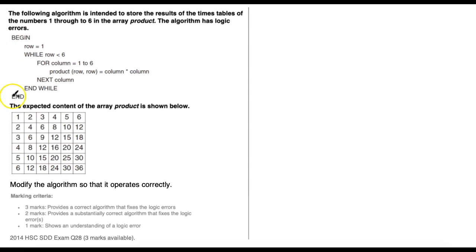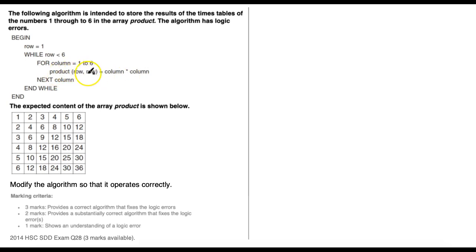The algorithm has logic errors. The algorithm begins with a variable called row storing a value of one. We have a while loop with the condition while row is less than six, and inside that while loop we have a for loop. The for loop runs six times — for column equals one to six — and in each iteration it runs the line: product(row, row) equals column multiplied by column. So the while loop is meant to run six times, going through each row, and the for loop goes through each column of each row.